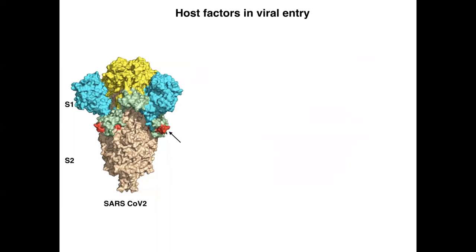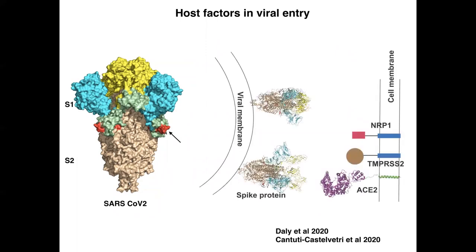This motif is also found in other viruses such as Ebola and HIV. What this motif allows is for the spike protein to bind to another receptor called neuropilin-1, which is much more widely expressed in cells. Along with ACE2, neuropilin-1 now allows efficient entry of SARS-CoV-2 into cells.